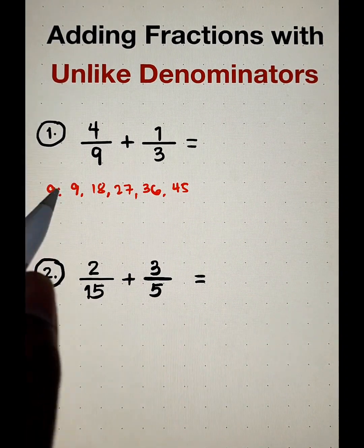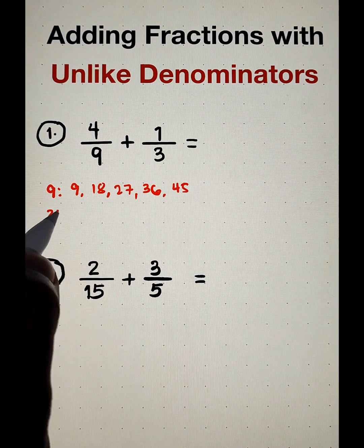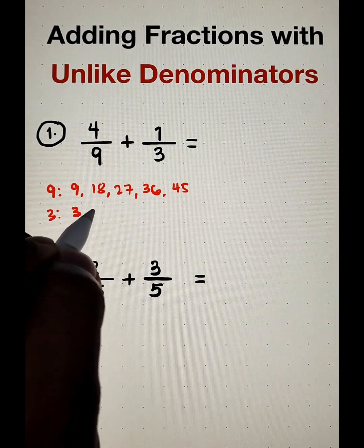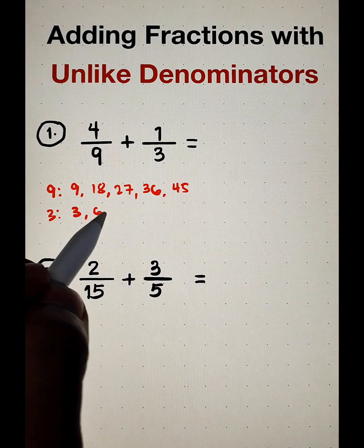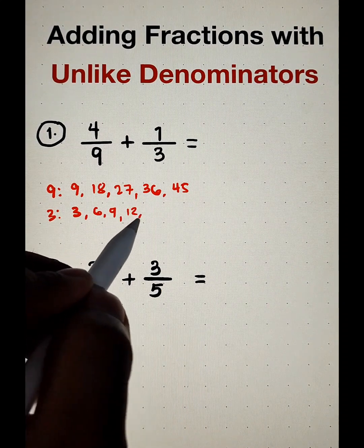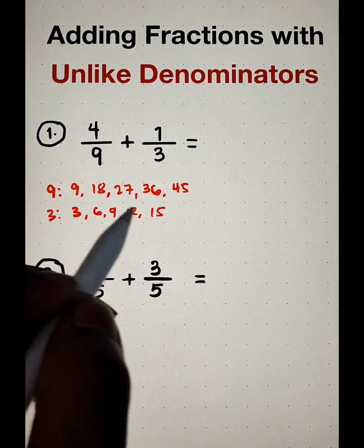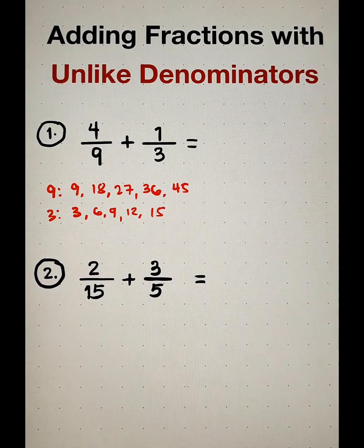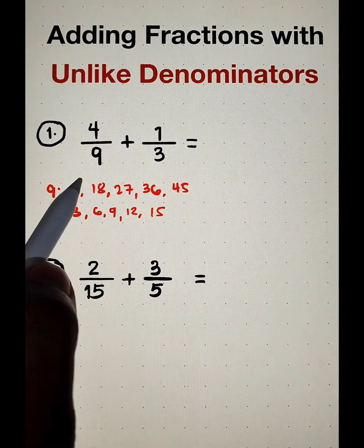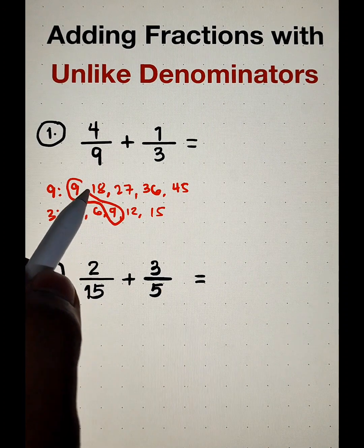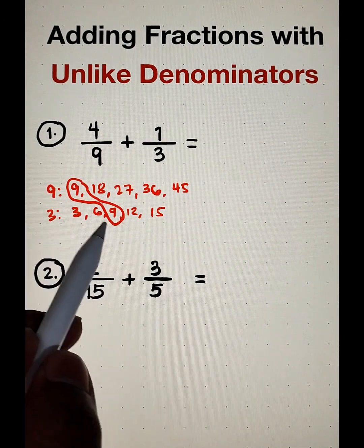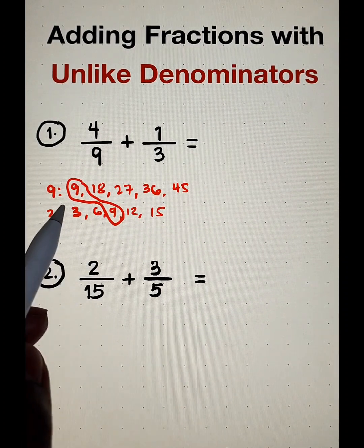So what about 3? The multiples are 3, 6, 9, 12, 15. And as you can see, we already have a common multiple which is this number, 9. This number will serve as the least common denominator.